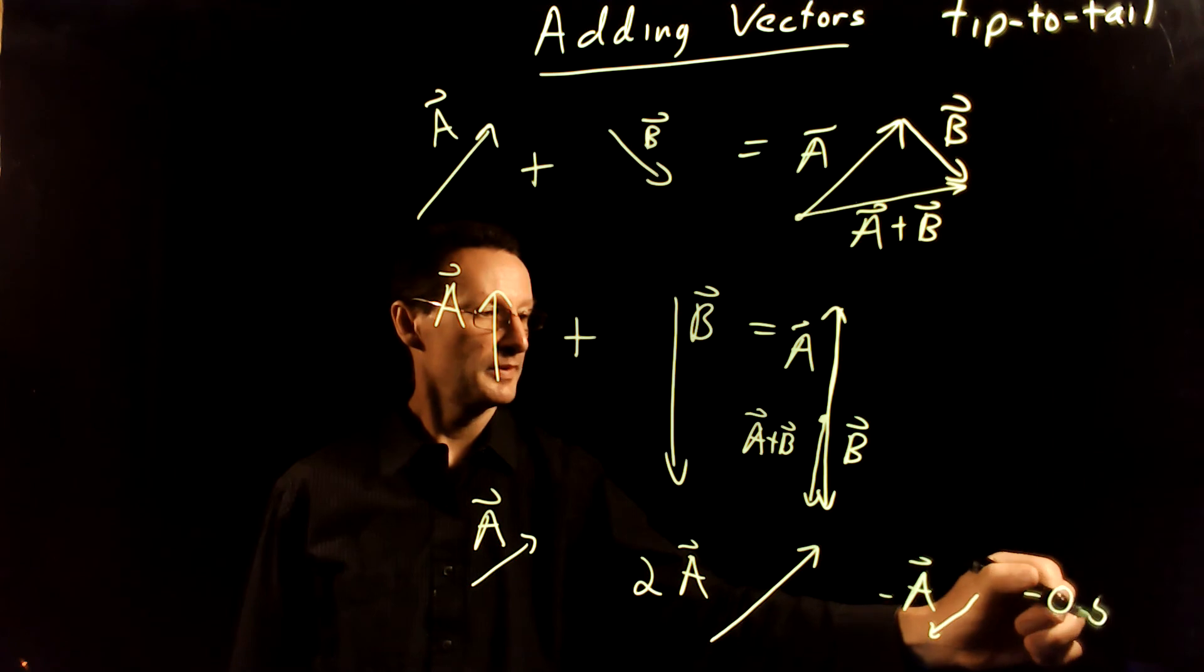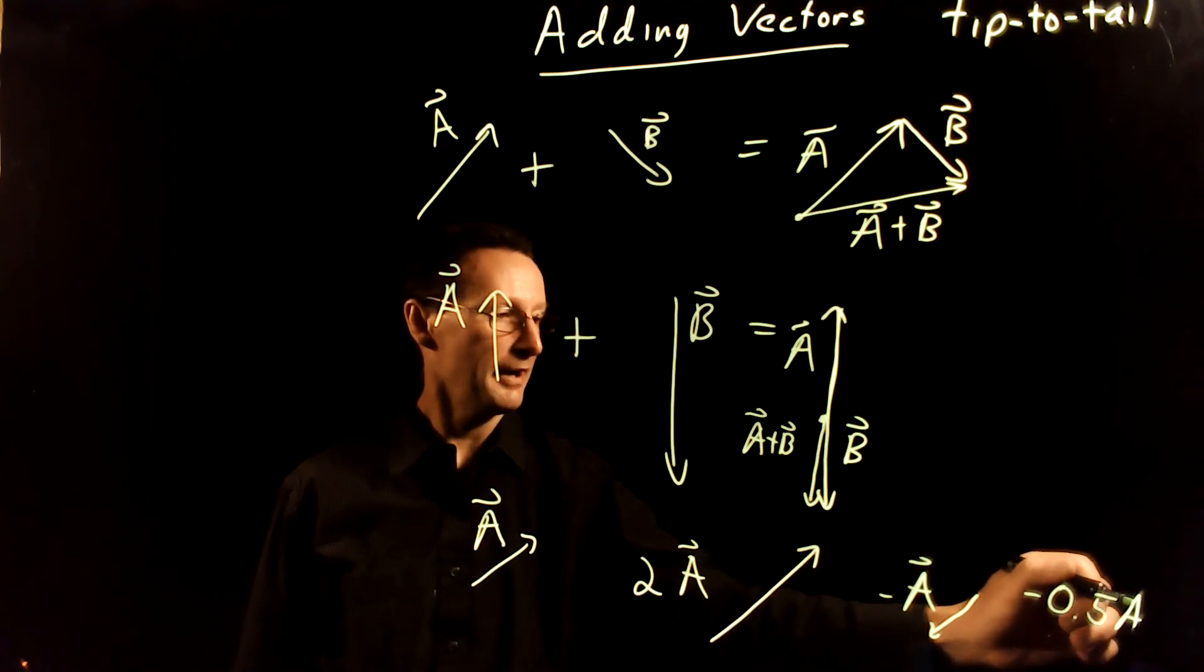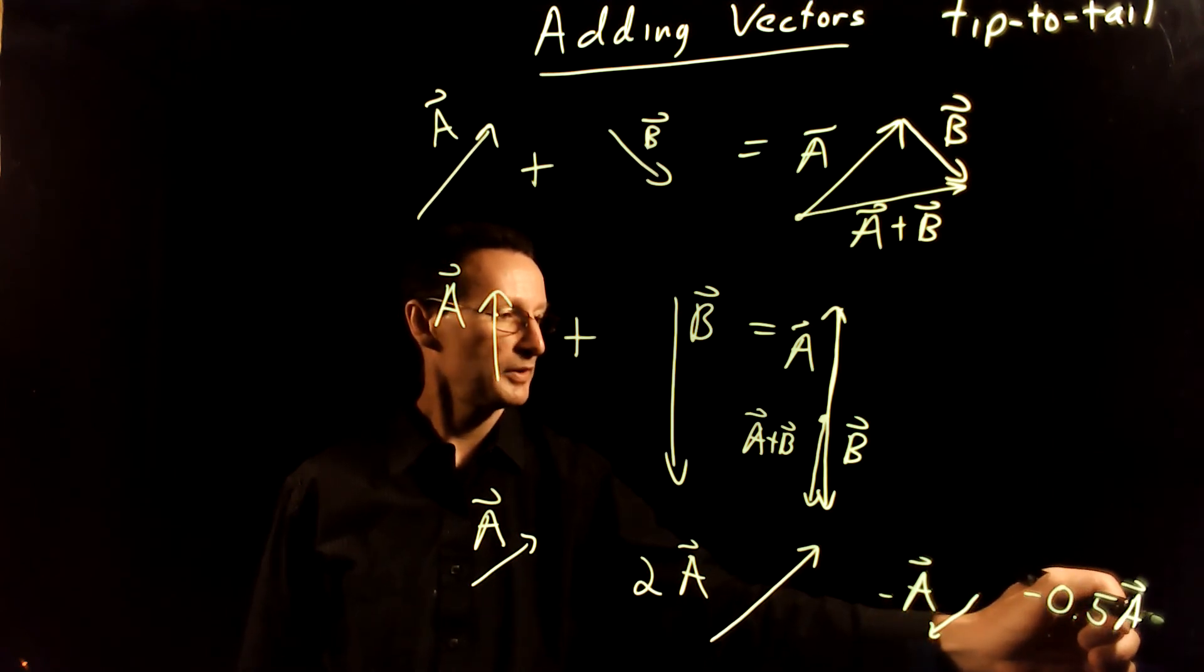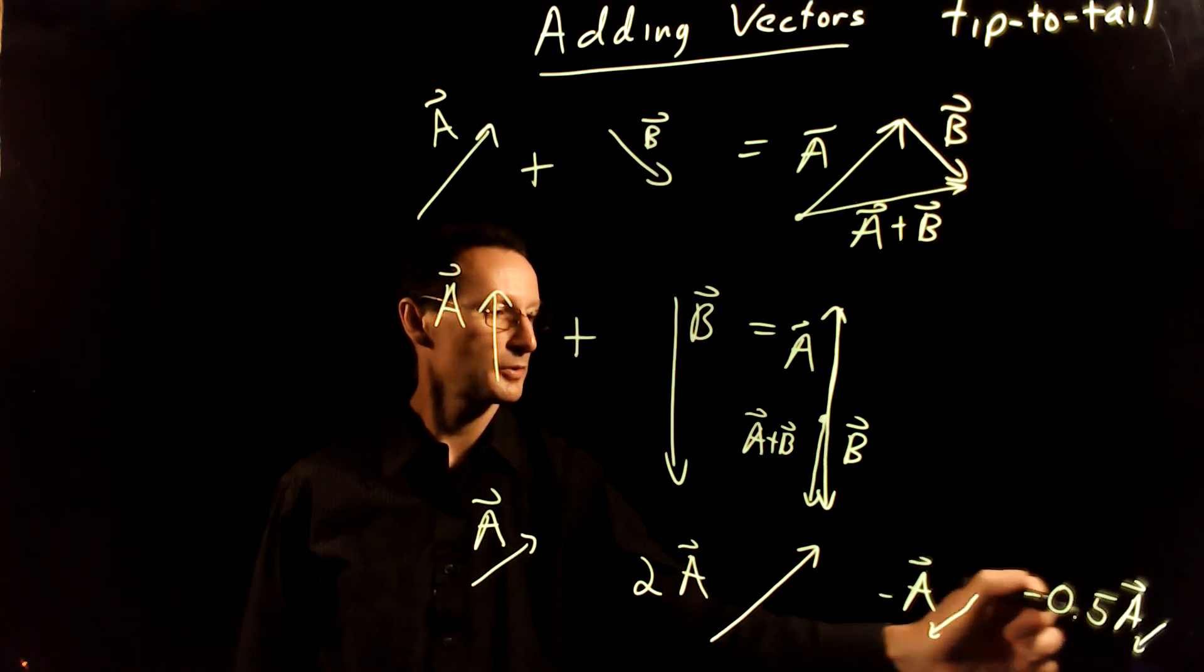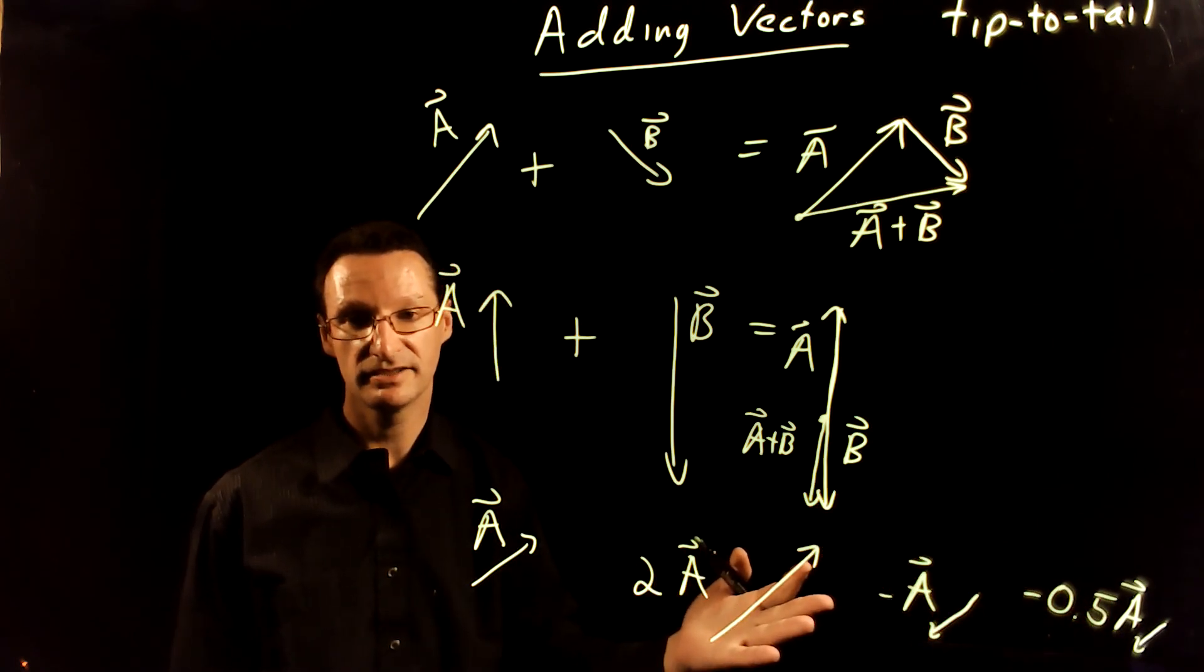So you could think about multiplying it by negative half, and that would flip the direction and shorten it. Okay, so we can do a combination of things here.